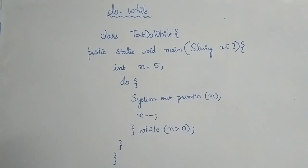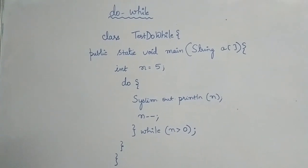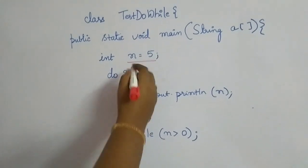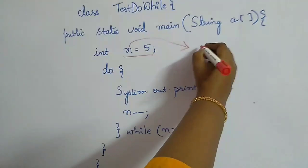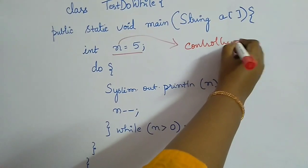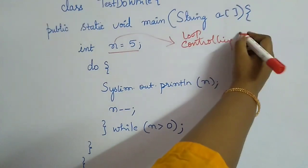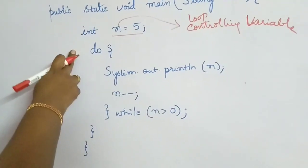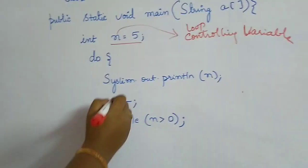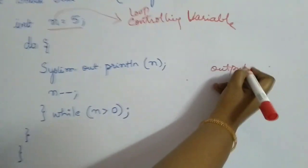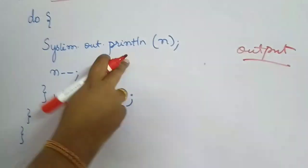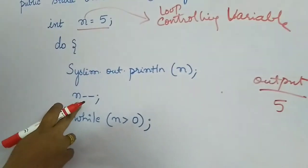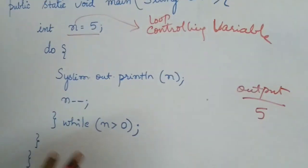Let's look at a program that prints numbers from 5 to 1 in reverse order. We declare a variable n equal to 5, and use n as the loop controlling variable. Since do-while starts without checking the condition, it immediately executes the body. The system.out.println prints n, so 5 is printed on the screen first.